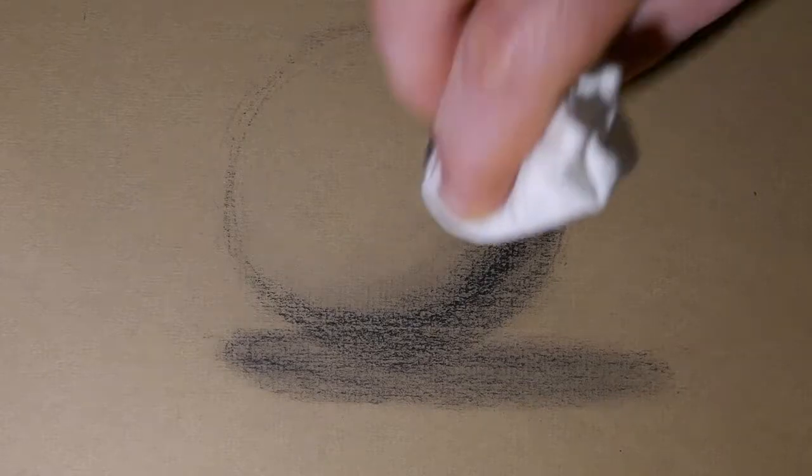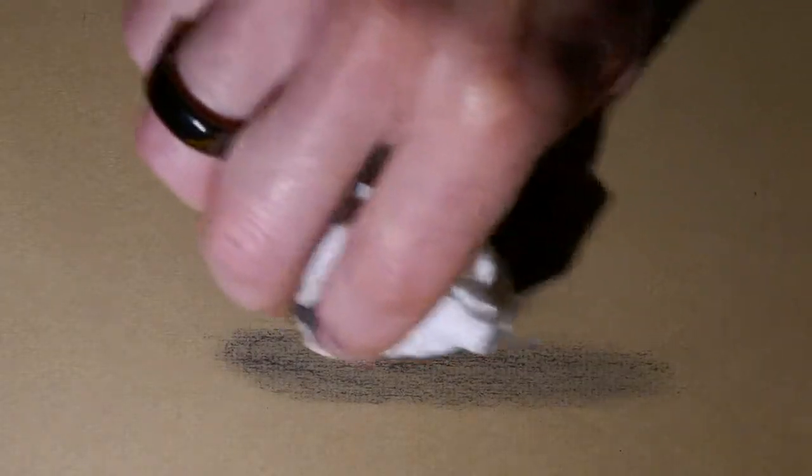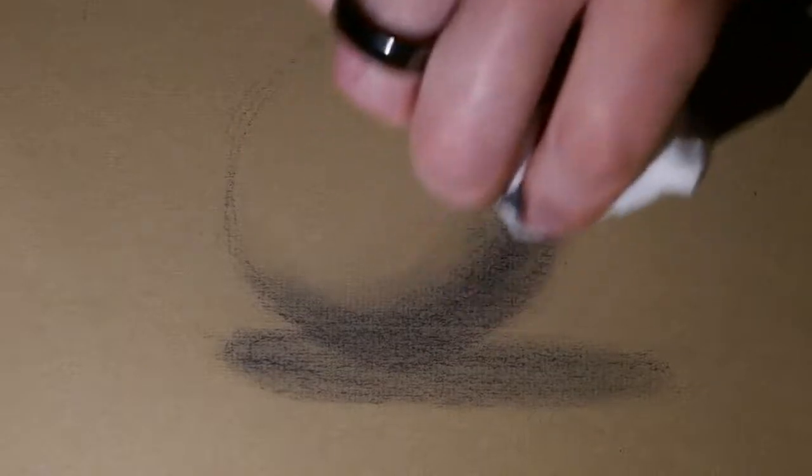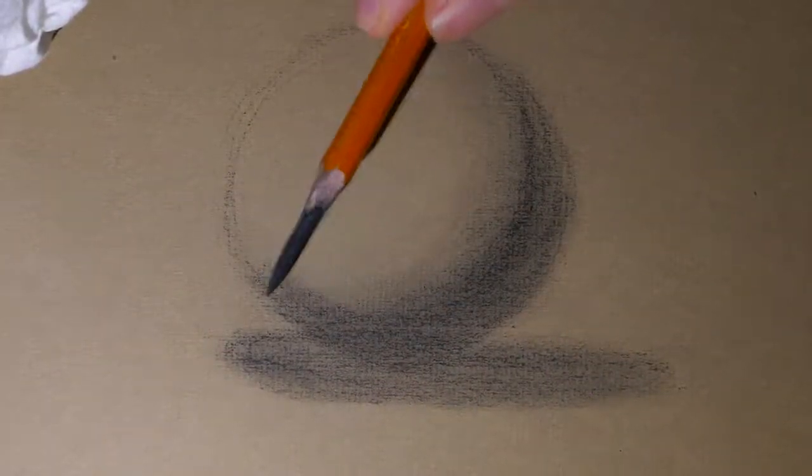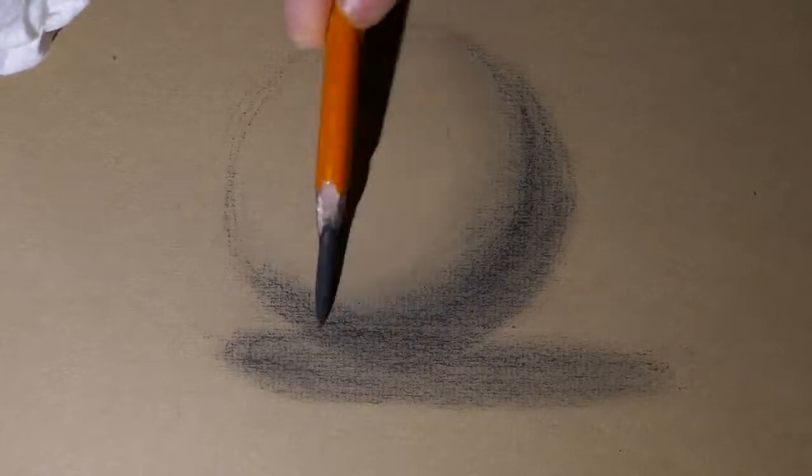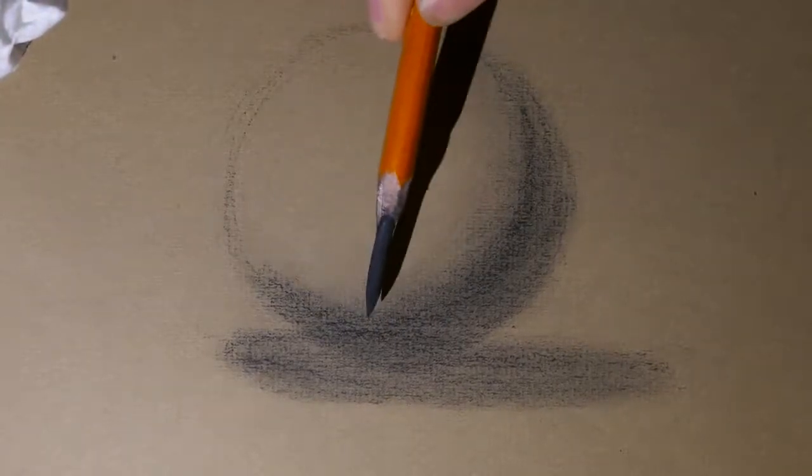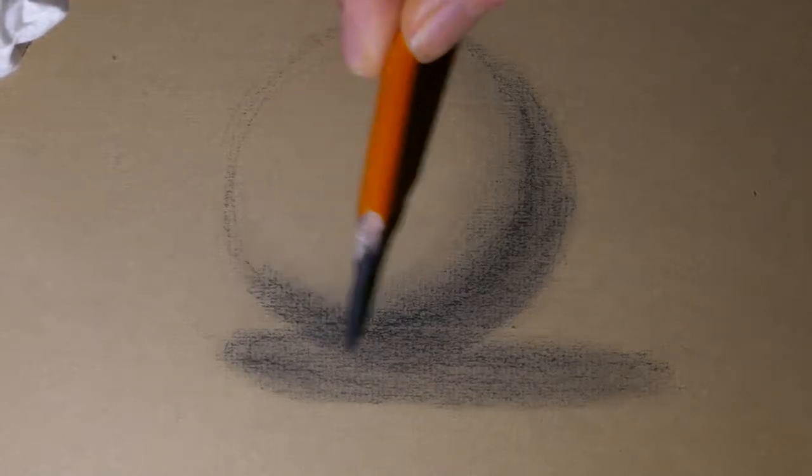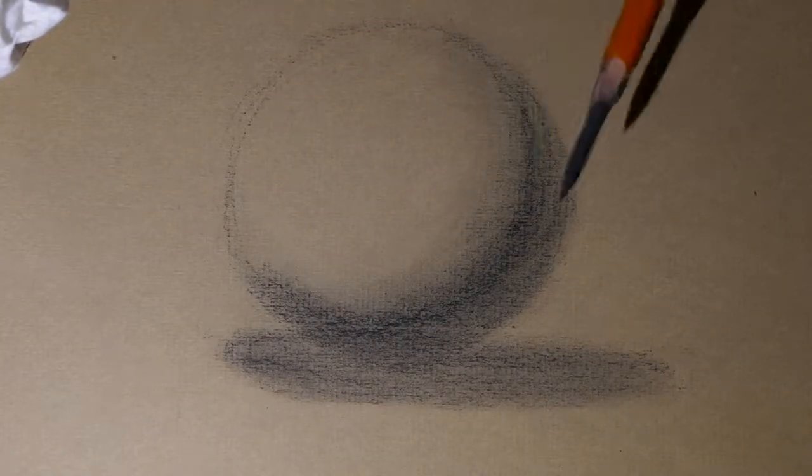I'm going to smush it in a little bit, soften it. But I'm really thinking of the shadow shape and being deliberate with it. This last little bit here is called the terminator where the last bit of mid-tone ends and the shadow begins.